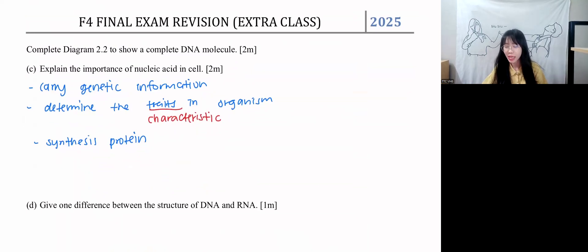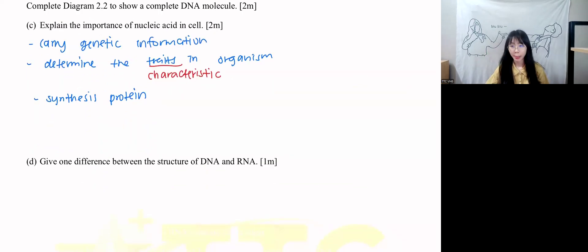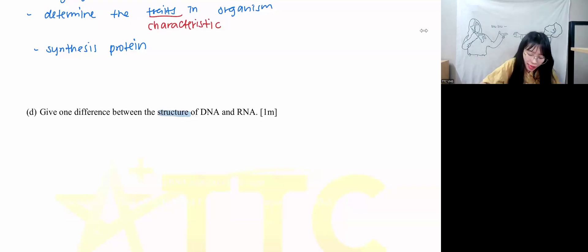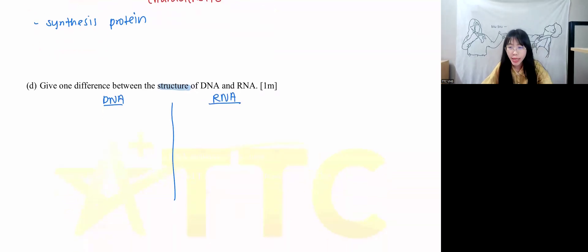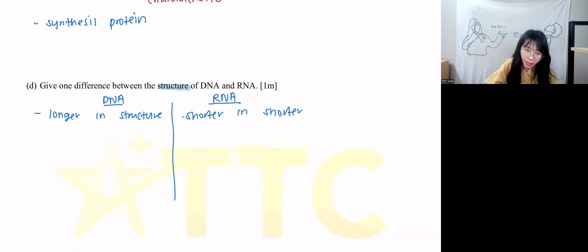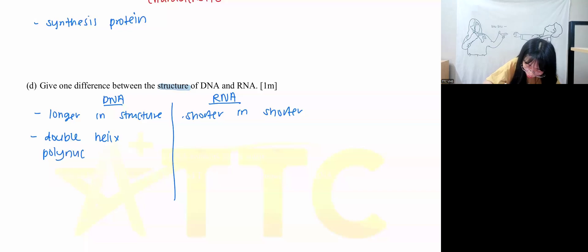In Form Five they will ask you about mRNA codons and how they differ when there is a mutation. At your level, I don't think they will ask that yet. For one difference between RNA and DNA in structure: DNA is longer, RNA is shorter in structure. DNA is a double helix polynucleotide chain.